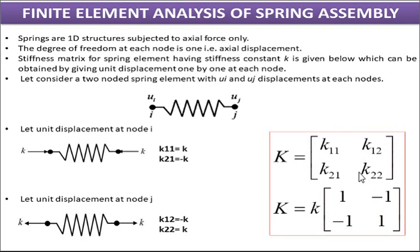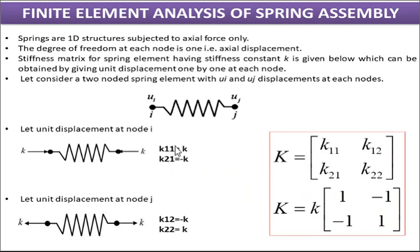We need to find these four elements by considering the degree of freedom at each node — by giving unit displacement to each node one by one. Let us give unit displacement at the first node I in the positive direction. It will generate a force of K in the right direction at node I, and a force K in the left direction at node J. Based on this, K11 is positive K (force in right direction at first node) and K21 is minus K (force in negative direction at second node).